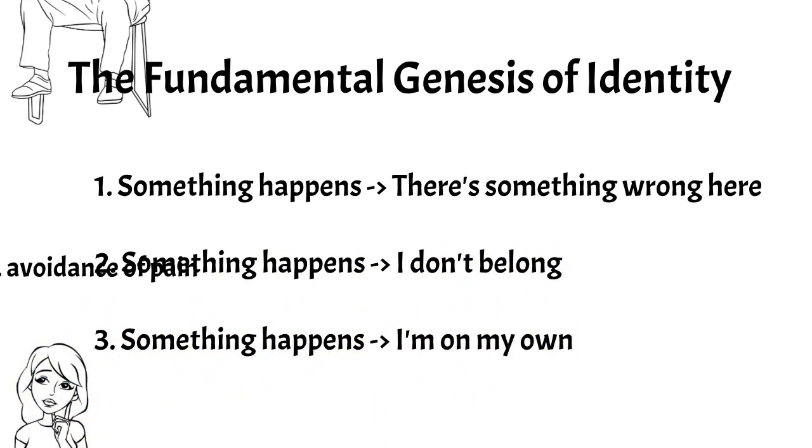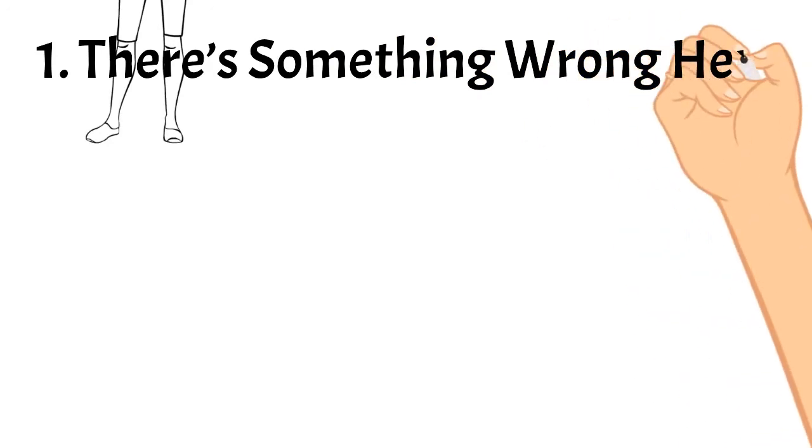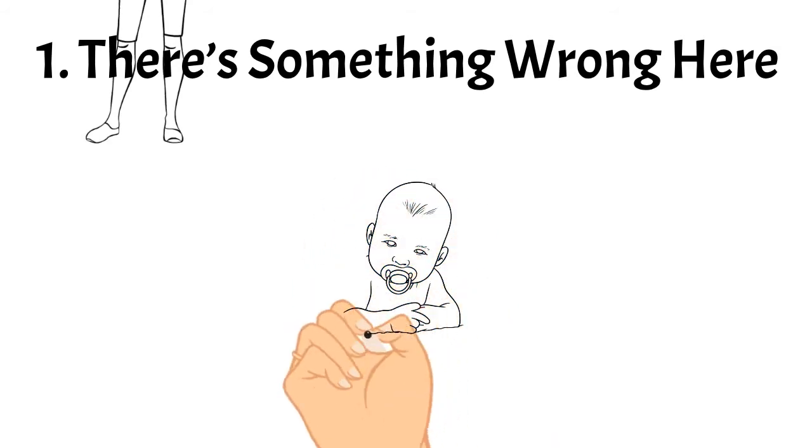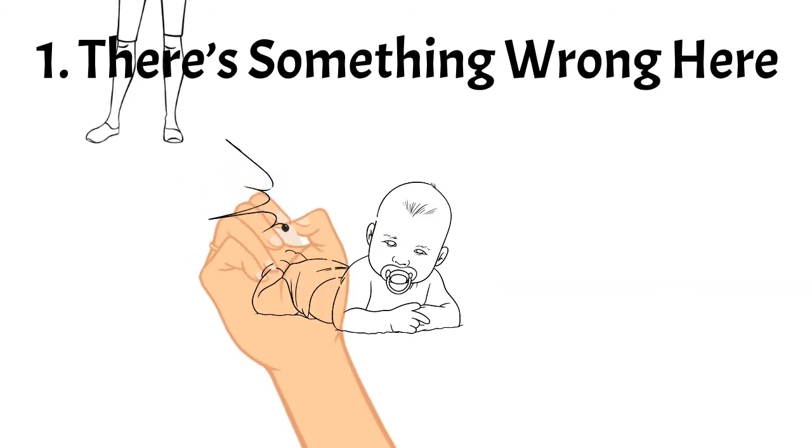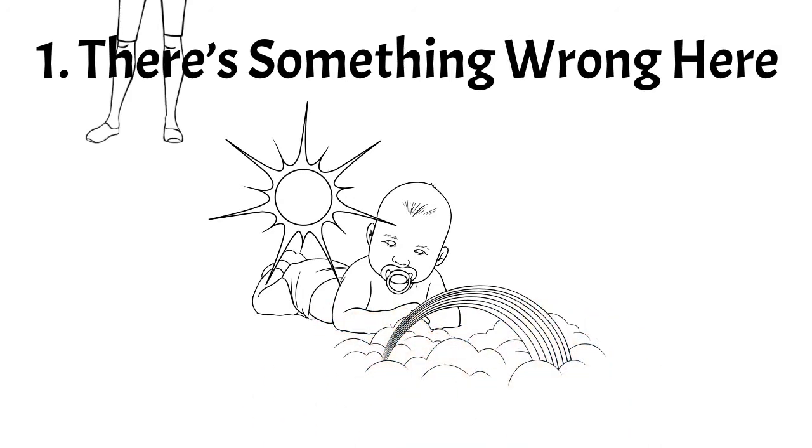The first incident occurs when we're very young and is often among the earliest memories we can remember. We all start out as innocent babies, blissfully ignorant of reality. To us, everything seems perfect and we don't have a care in the world. But then something happens where we harshly realize, for the first time, that things can go very wrong. We learn that life isn't all sunshine and rainbows.